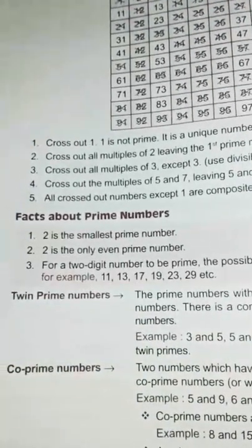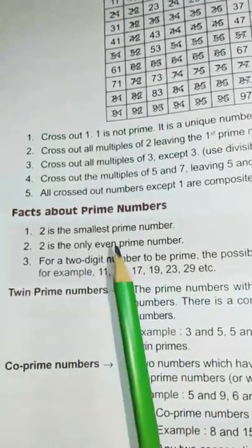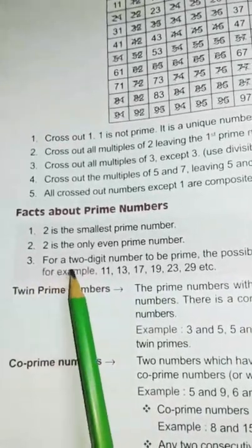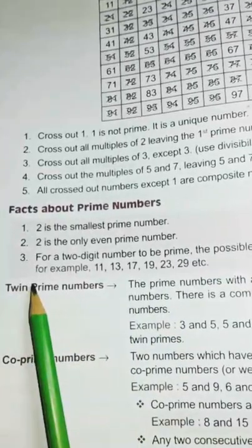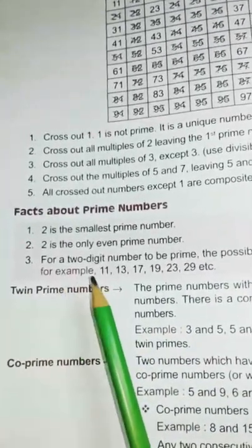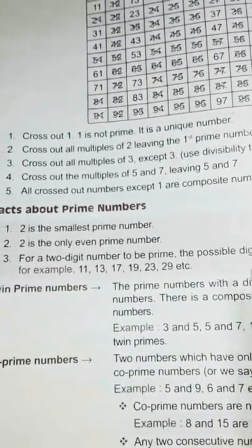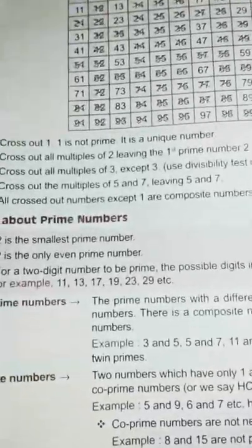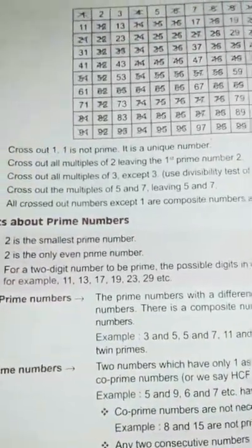Then, facts about prime numbers. One, 2 is the smallest prime number. Two, 2 is the only even prime number. Three, for a two digit number to be prime, the possible digits in one's place are 1, 3, 7, and 9.